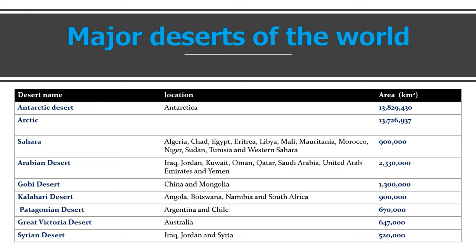Continuing the major deserts: Libya, Mali, Morocco. The Arabian Desert spans Iraq, Jordan, Kuwait, Oman, Qatar, and Saudi Arabia. The Gobi Desert is in China and Mongolia. Then Kalahari Desert, Patagonian Desert, Great Victoria Desert, and Syrian Desert. These are the major deserts in the world.